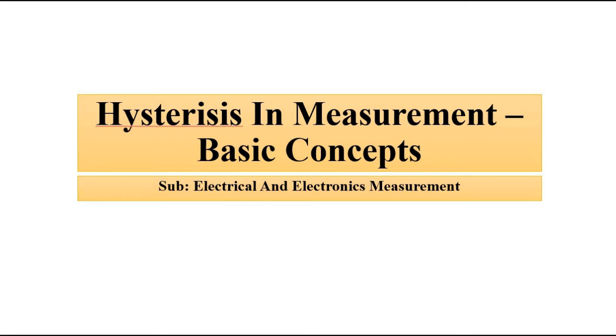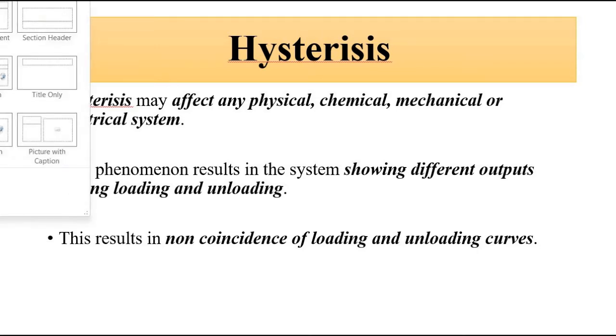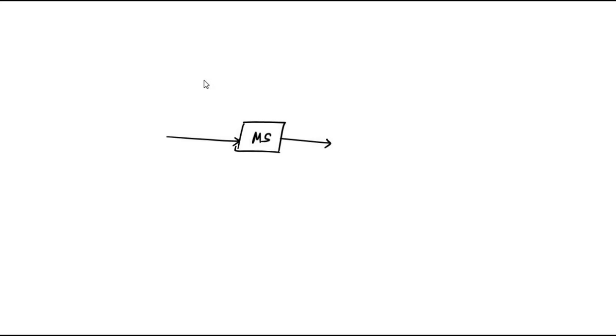Hysteresis changes very slowly - so slowly that it is very hard to notice any change in it. This phenomenon is about what happens when we provide some input to a measuring system - a device, instrument, or sensor. We provide some input and get an output. We have discussed other performance characteristics such as sensitivity, range of instrument, and span.